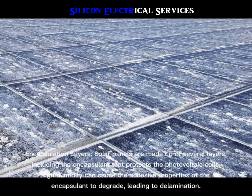Delamination of encapsulation layers: Solar panels are made up of several layers, including the encapsulant that protects the photovoltaic cells. High humidity can cause the adhesive properties of the encapsulant to degrade, leading to delamination.